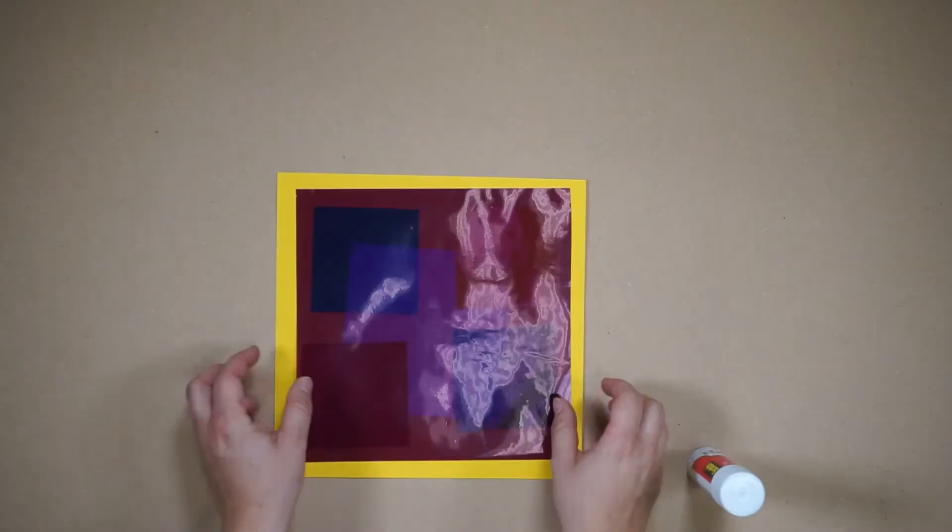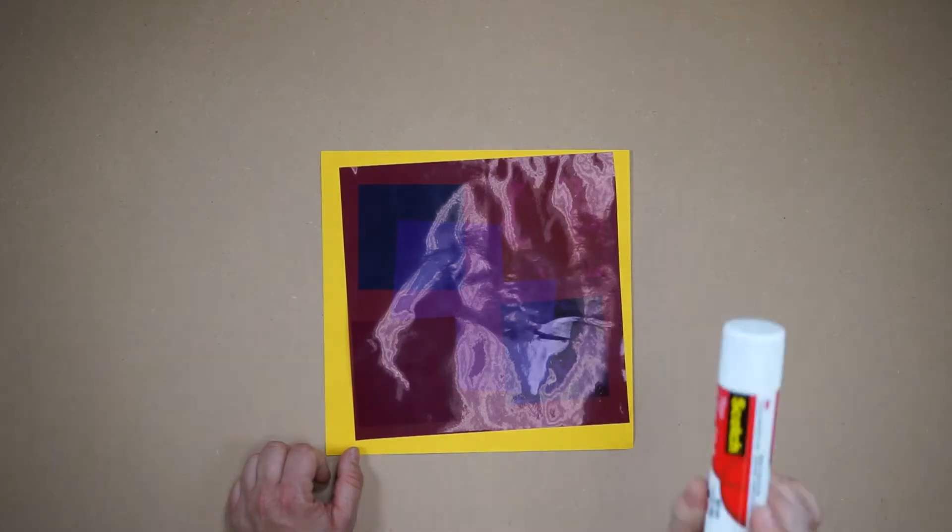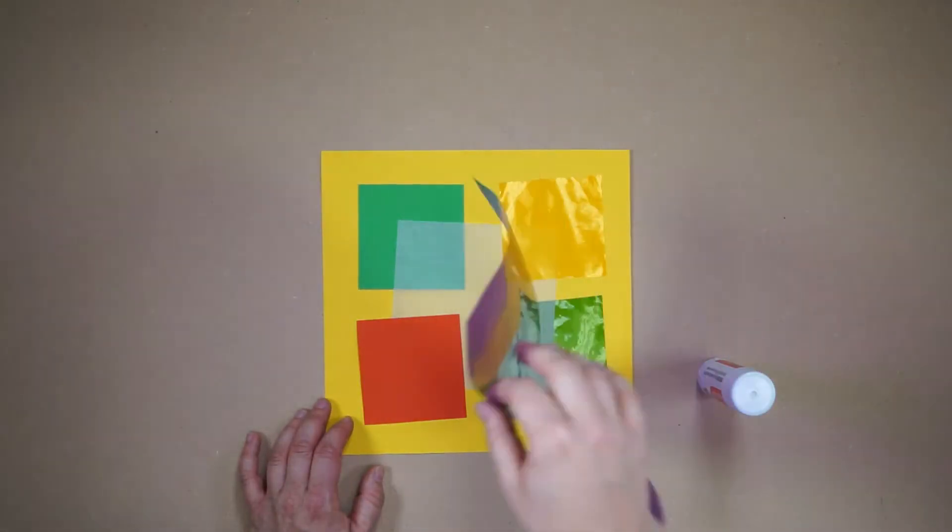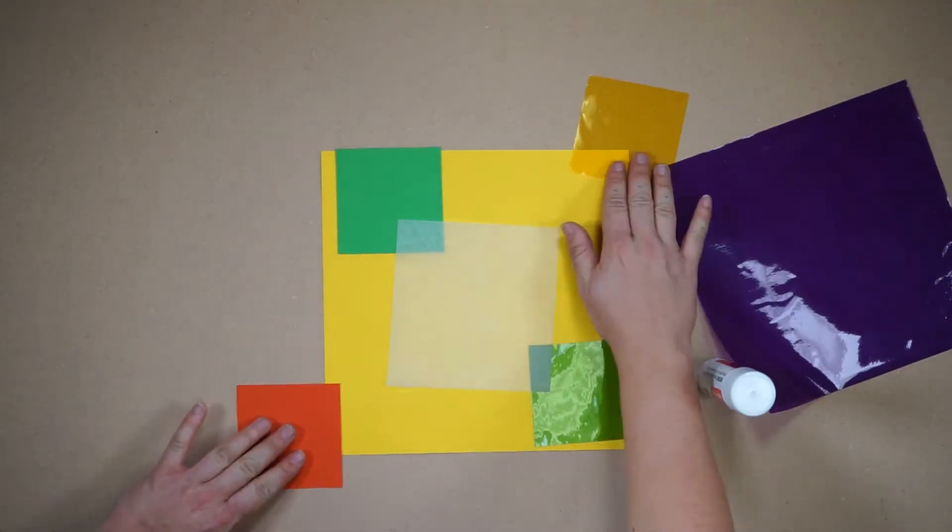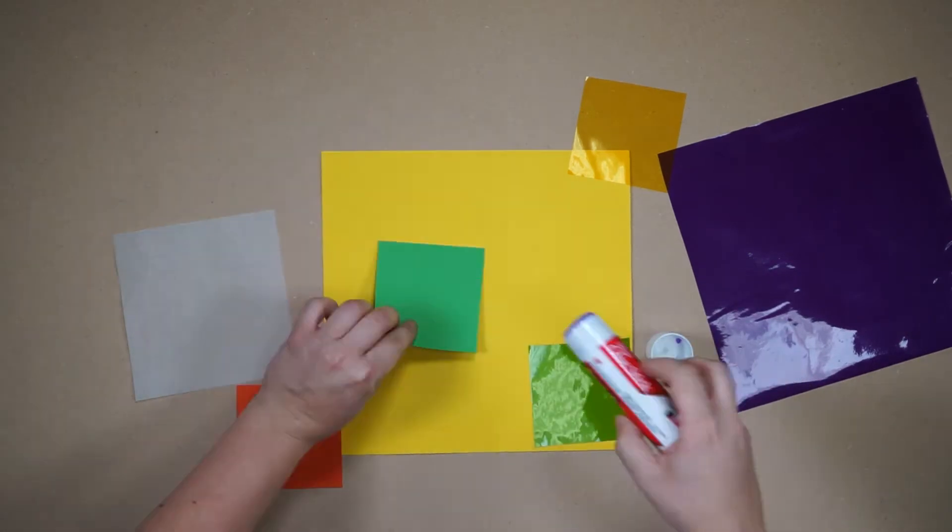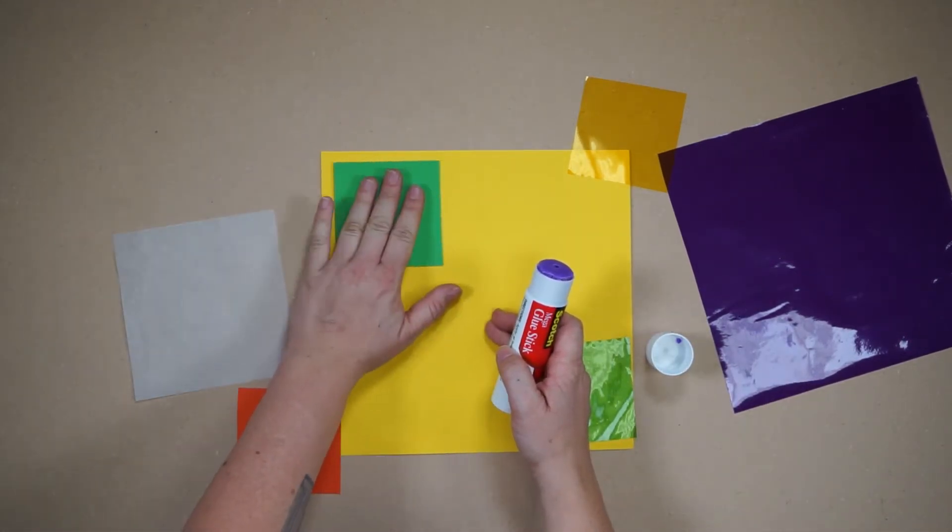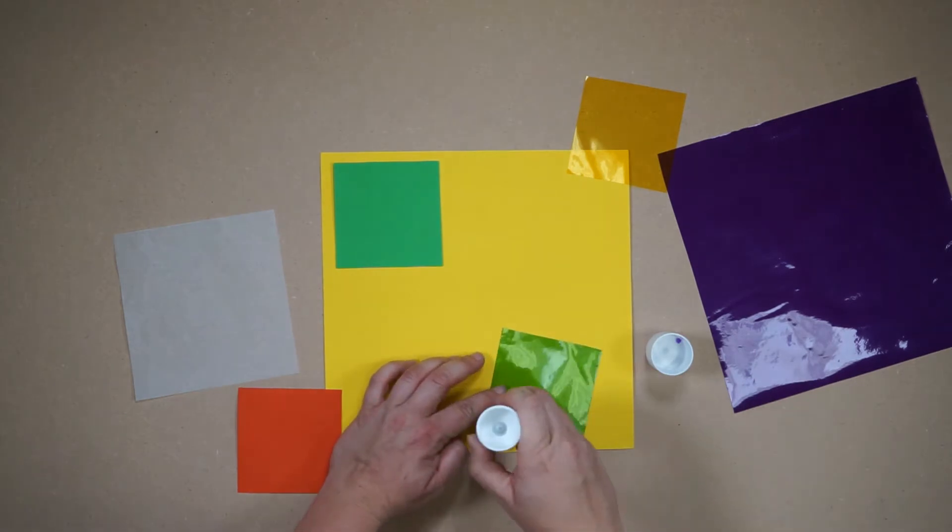Once you've decided, you're ready to glue. When you glue, try to put the glue on the corners of each square and start by gluing the layers on the bottom first. Then work your way to the top layer.